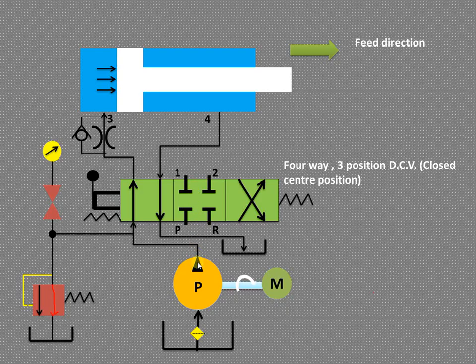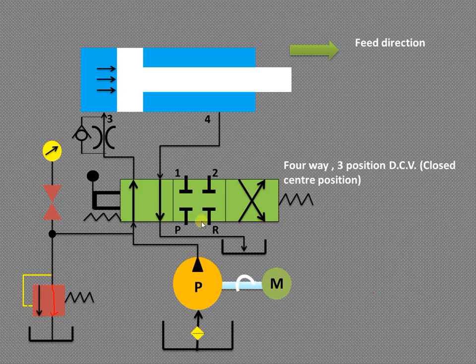If fluid comes from the pump and enters at port P in the center block position, nothing will happen. The position of the spool inside the directional control valve is such that all the ports are blocked and no operation will be performed — no fluid will be delivered to the cylinder. It is a lever-operated and spring-controlled directional control valve.